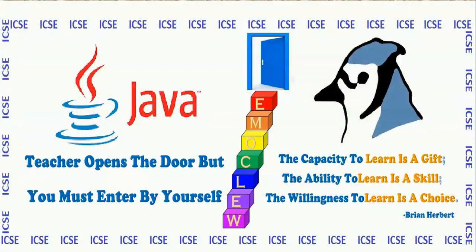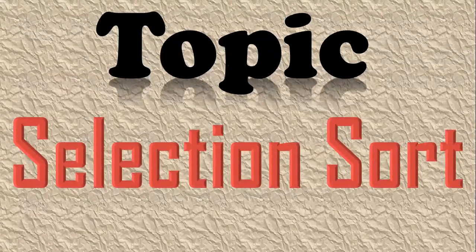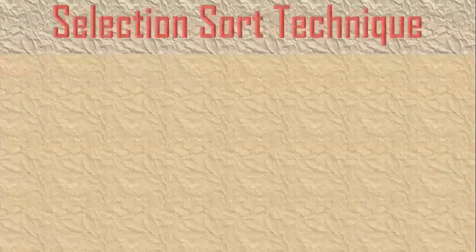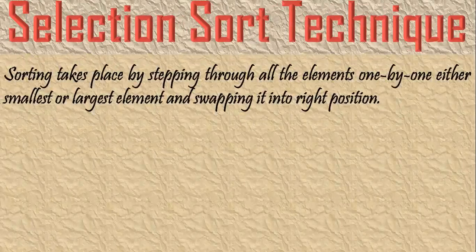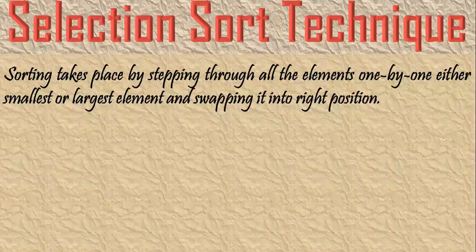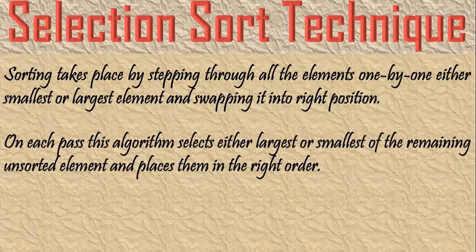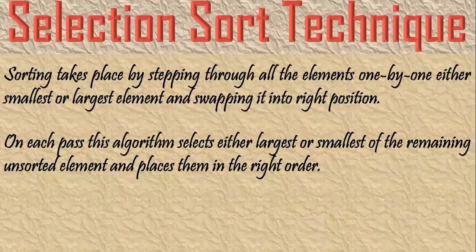Welcome back students. In this video lesson, we will learn selection sort in array. In selection sort technique, sorting takes place by stepping through all the elements one by one, finding either the smallest or largest element and swapping it into the right position. On each pass, this algorithm selects either the largest or smallest of the remaining unsorted elements and places them in the right order.